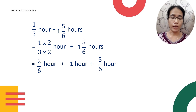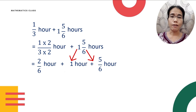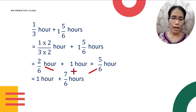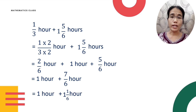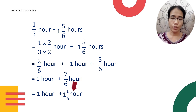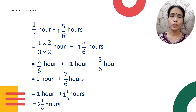Then one and five-sixths hours — we split it to one hour and five-sixths hour. Add the fractions and you'll get one plus seven-sixths hours. Since seven-sixths is an improper fraction, convert to a mixed number: you'll get one and one-sixth. So one plus one and one-sixth hours gives you two and one-sixth hours.